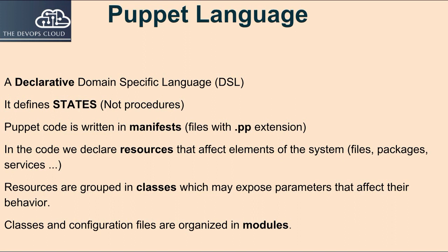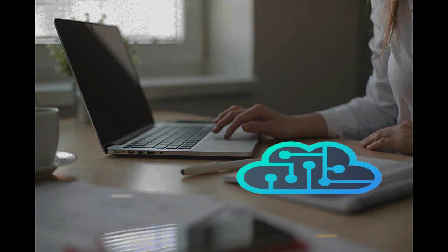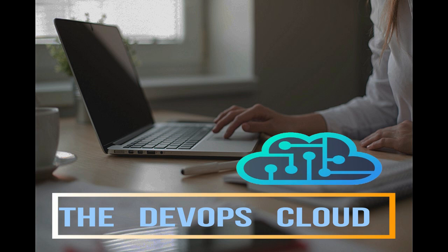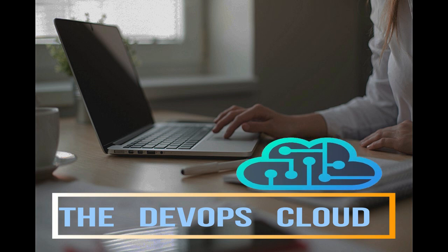To summarize: Puppet language is a declarative domain-specific language — it defines states, not procedures. Puppet code is written in manifests, files with .pp extension. In the code we declare resources that affect elements of the system such as files, packages, and services. Resources are grouped in classes which may expose parameters that affect their behavior. Classes and configuration files are organized in modules. In this lecture we learned about Puppet DSL language. I hope you have enjoyed it — feel free to move on to the next lecture. Bye.